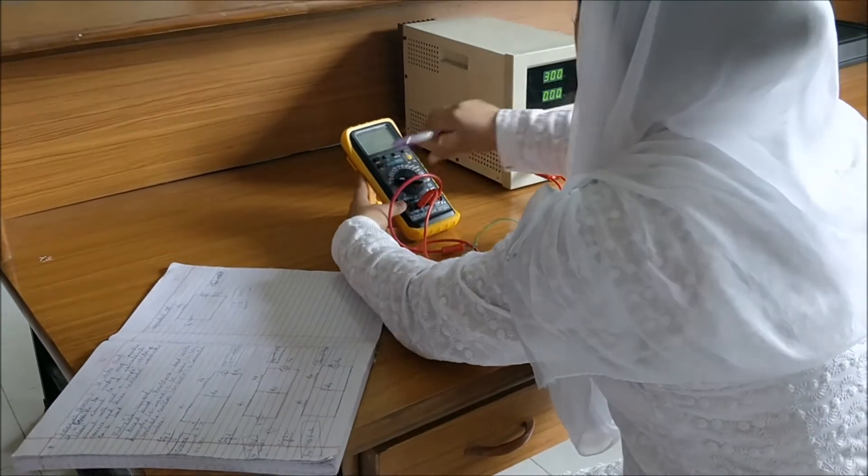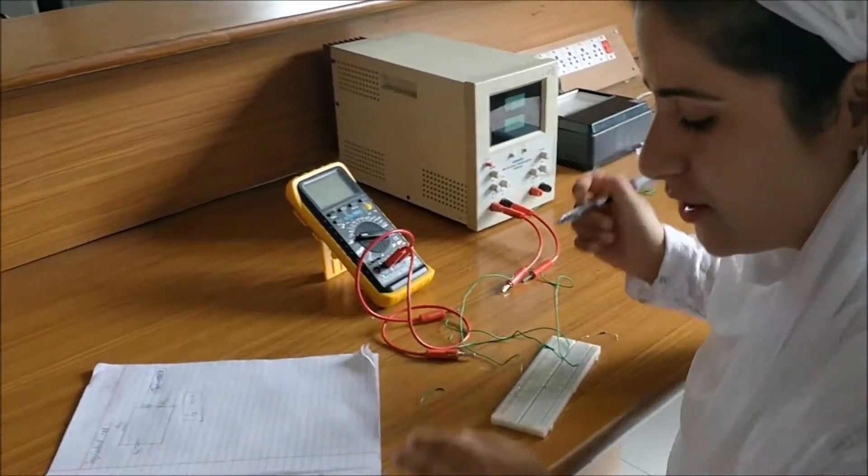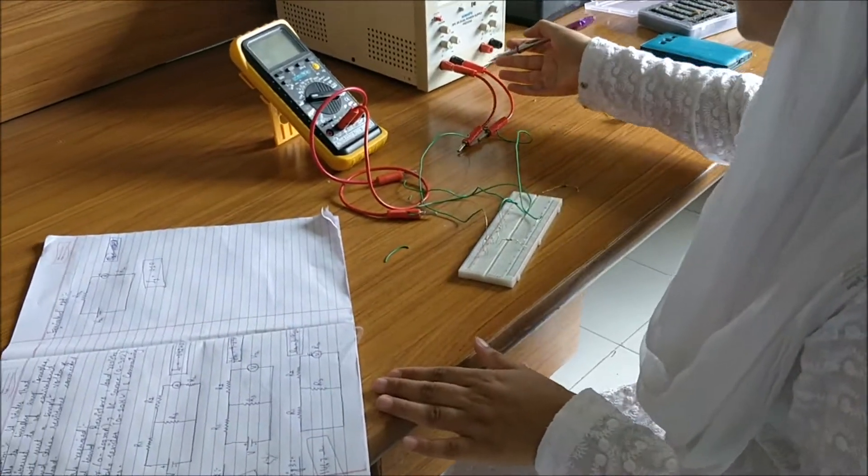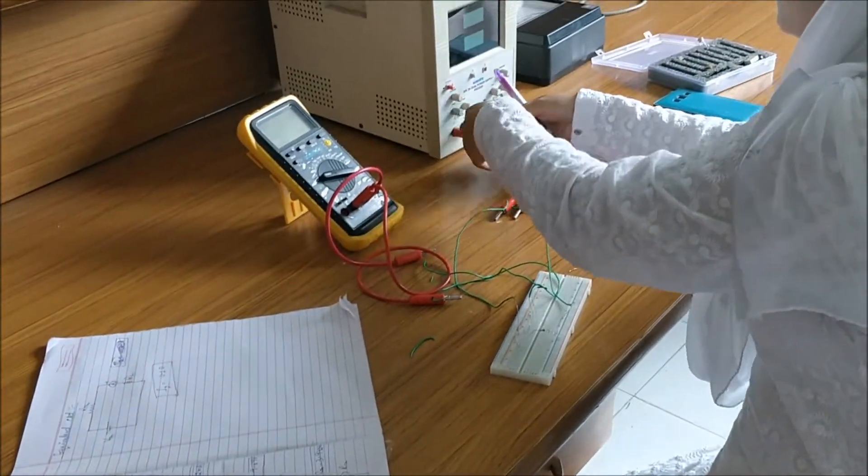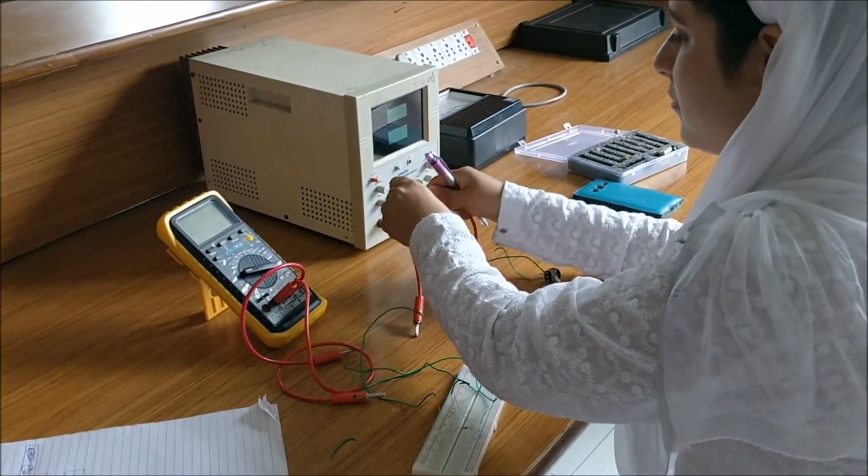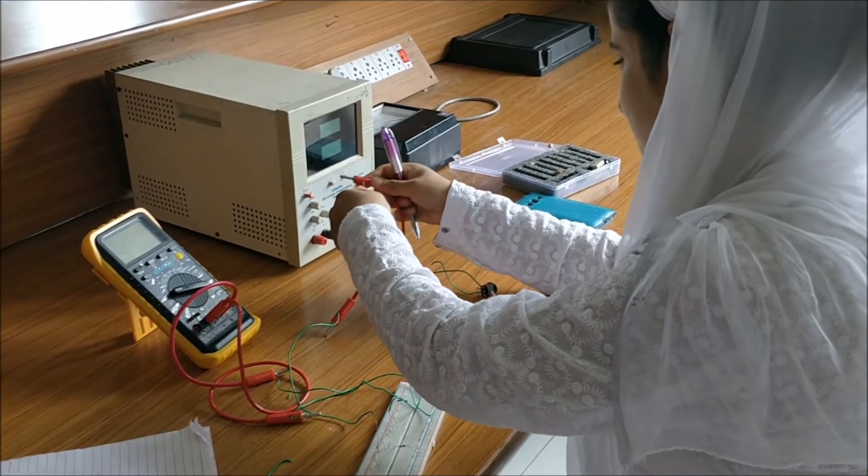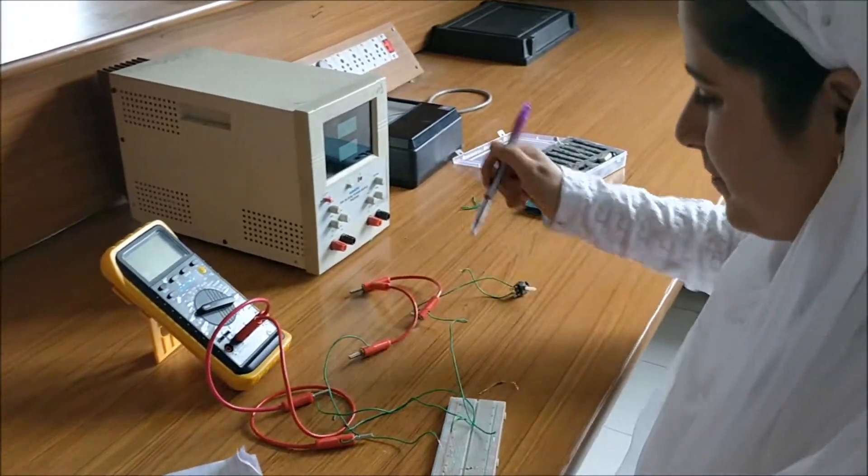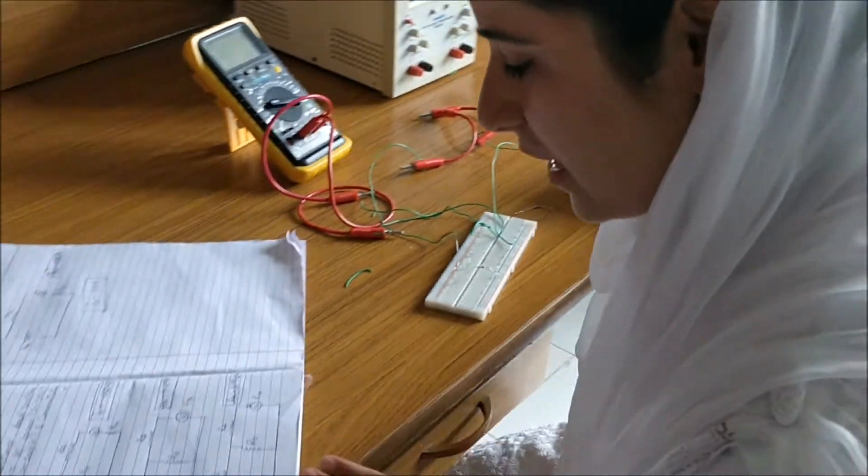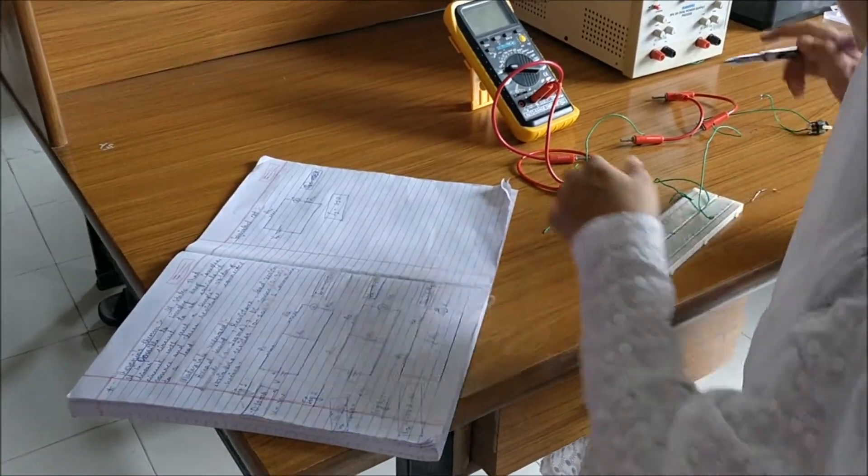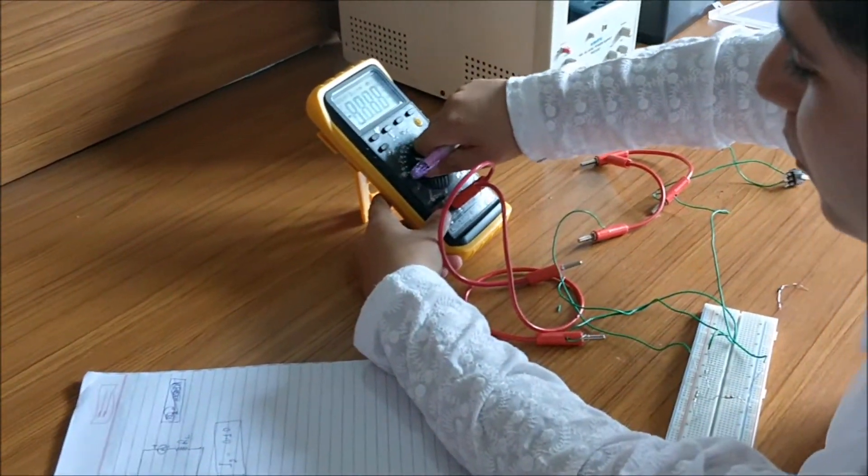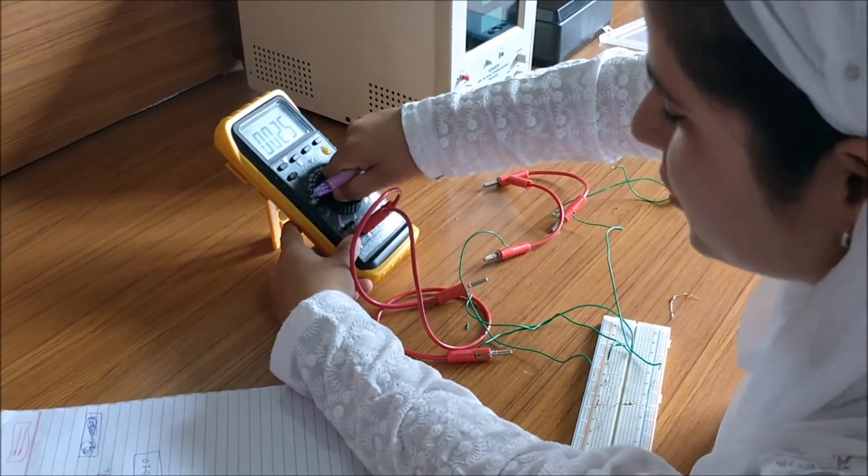And now there is the third step. In third step we just have to short the voltage source. And rest connections are same. Now we have to find RTH.